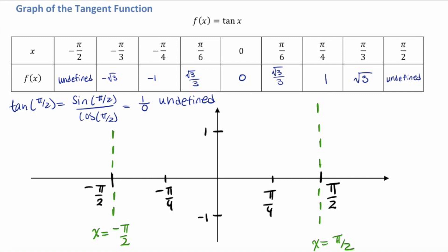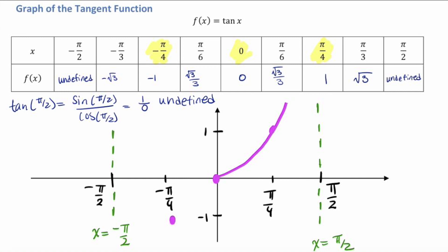Next, let's graph at negative π/4, at 0, and at π/4. Now while it's really tempting to just connect these with a straight line, that would be wrong. This is what the graph of tangent looks like. Our graph will get infinitely close to these asymptotes without ever touching them. And this is simply 1 period.